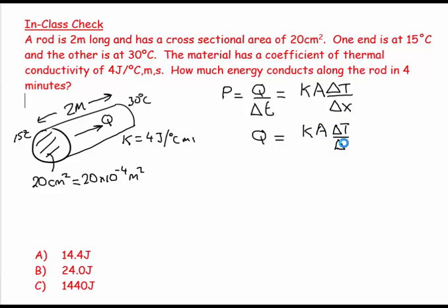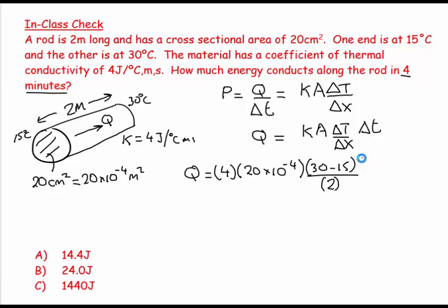So that means that Q, the amount of heat, is K·A·ΔT over ΔX. But if I want the amount of heat, I'm going to multiply by this amount of time. So Q equals K, which was 4, the area 20 times 10 to the minus 4, my temperature difference is 30 minus 15, my length difference is 2 meters. My time - it says 4 minutes and you're supposed to know you've got to work in seconds, so that will be 4 times 60.